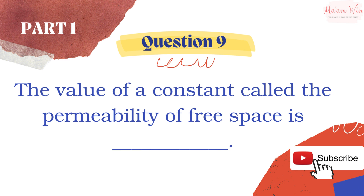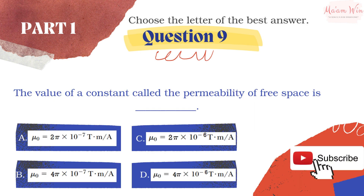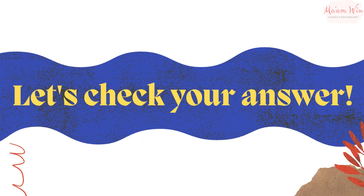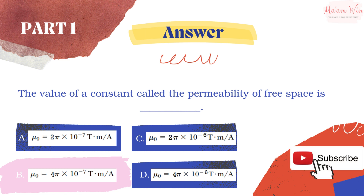Question number nine: the value of the constant called the permeability of free space is blank. Choose the letter of the best answer. Let's check your answer — the right answer is letter B.